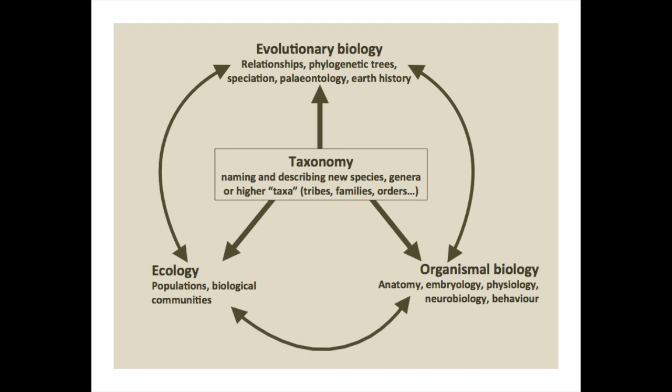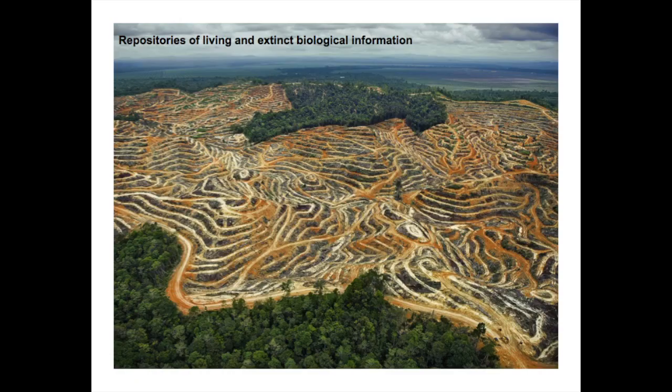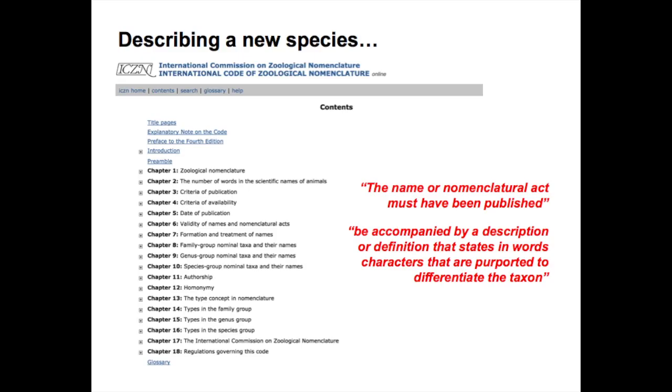Organismal biology — anatomy, embryology, neurobiology, behavior — we have to know what species we're dealing with to make comparisons between species. All of these disciplines are related in this rich field of biology where the goal is to understand the evolution and functions of different organisms. In this day and age where we're destroying the environment, taxonomy and collections-based research has an additional important role in documenting life on Earth before it goes extinct. Many specimens in museums now probably represent species no longer found in nature.